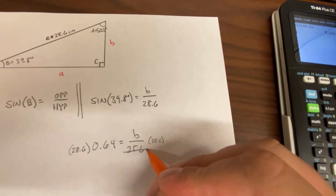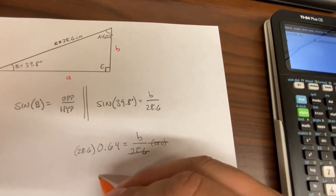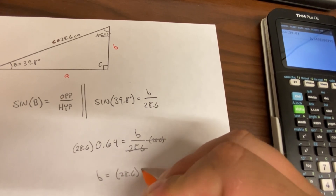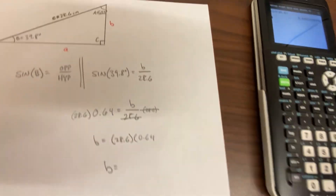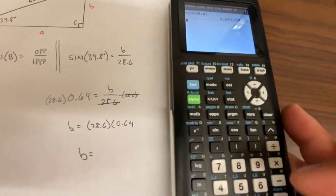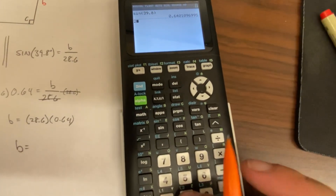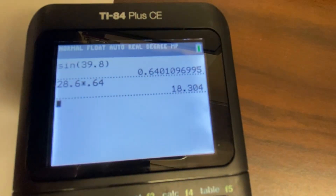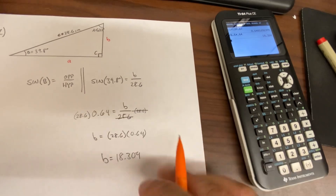We cancel the 28.6 on the right side, leaving b equals 28.6 times 0.64. Therefore b equals 18.304.